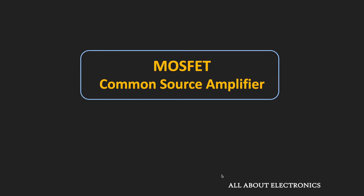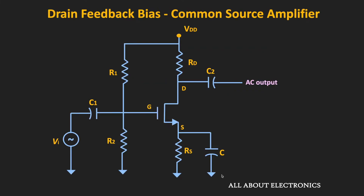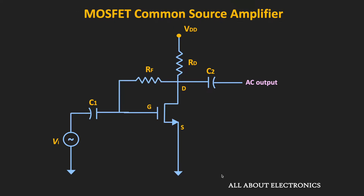Hey friends, welcome to the YouTube channel all about electronics. In the previous video, we saw how the MOSFET can be used as a common source amplifier, where it was biased in the voltage divider biasing configuration. Another important biasing technique is the drain feedback bias. In this video, we will do the small signal analysis of the common source amplifier biased using the drain feedback bias, find expressions for voltage gain, input and output impedance, and also show some simulation results.